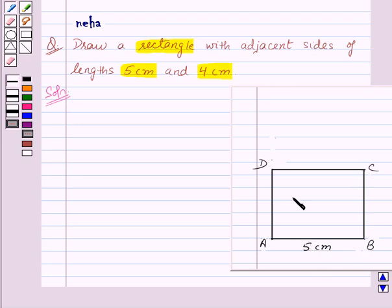That is AB equal to DC equal to 5 cm. And the width will be equal to 4 cm. So AD equal to BC equal to 4 cm.